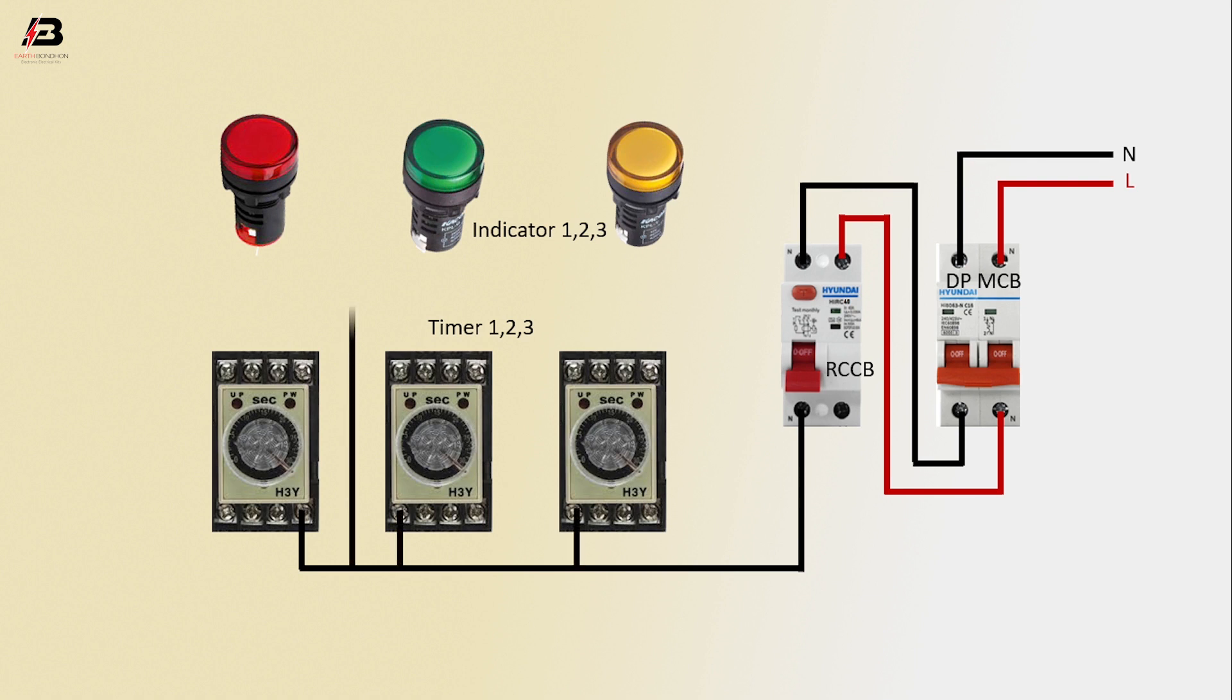Neutral connection input to indicator lamp 1, indicator light 2 and 3. Phase connection output from RCCB to connect timer 3, again from timer 3 to timer 1 and timer 3 to timer 2.